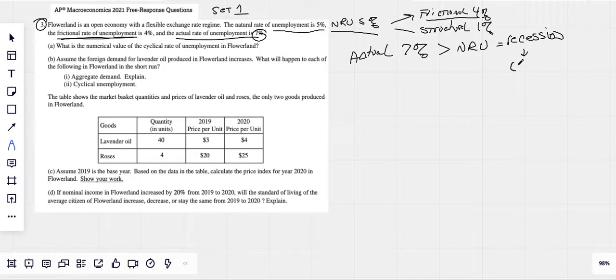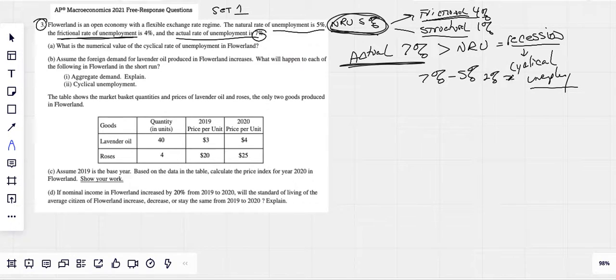Anytime we're in a recession, we have what we call cyclical unemployment. So we always have a natural rate of unemployment. There's always people frictionally unemployed looking for jobs or being let go because their job's not needed or because of technology. This happens all the time. And that 5% is our natural rate. But now we've got something special going on. We're in a recession. That extra 2%, that 7% minus that natural rate of 5%, that 2% there is our cyclical rate. All right. What is the numerical value? We just answered it. 2%. Easy.